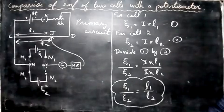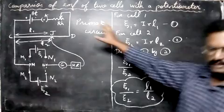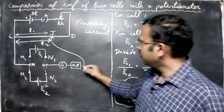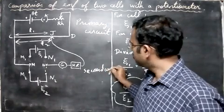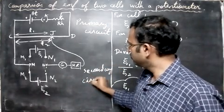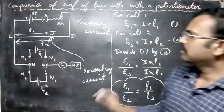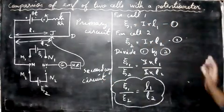Just go through the equations. The primary circuit is this part, and this part is the secondary circuit. Just go through the equations - very, very simple. Thank you for watching.